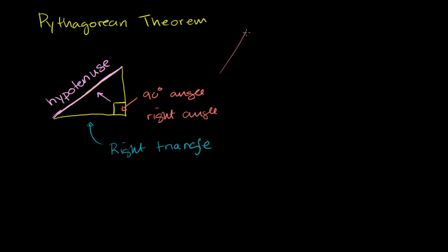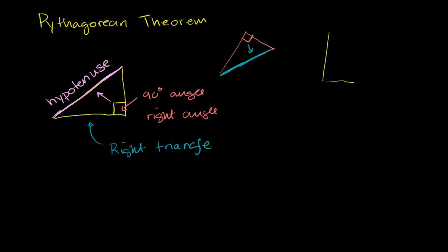Let's say I have a triangle that looks like that, and I were to tell you that this angle right here is 90 degrees. In this situation, this is the hypotenuse, because it is opposite the 90 degree angle — it is the longest side. Let me do one more just so we're good at recognizing the hypotenuse. So that is my triangle, and this is the 90 degree angle right there. What it opens into — that is the hypotenuse, the longest side.